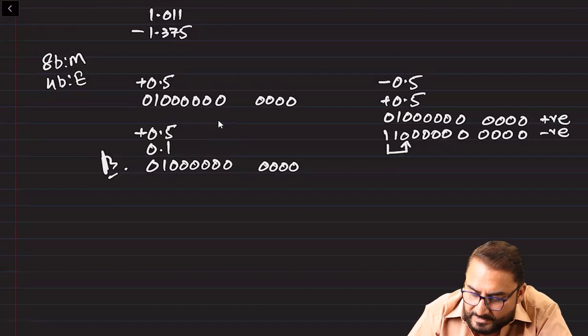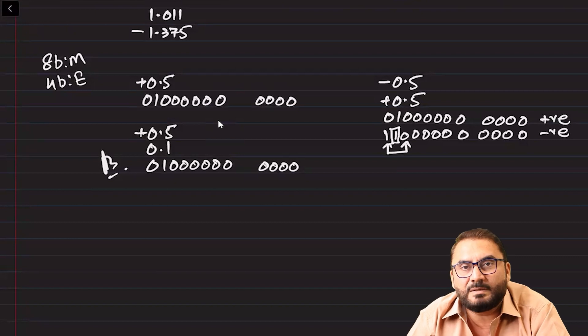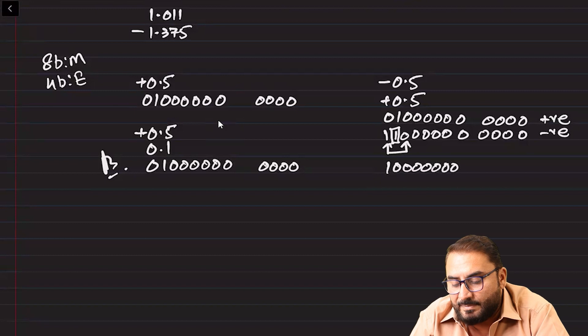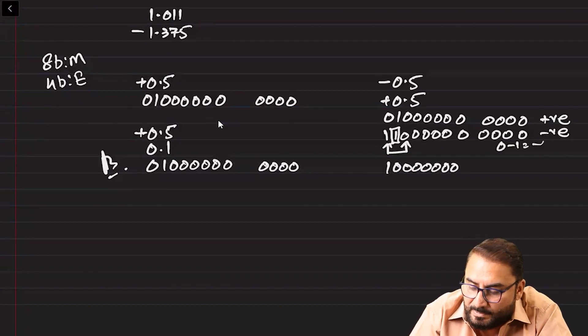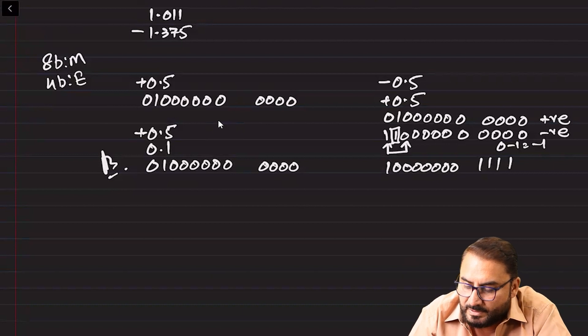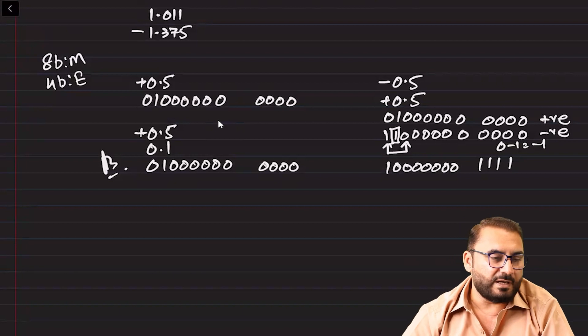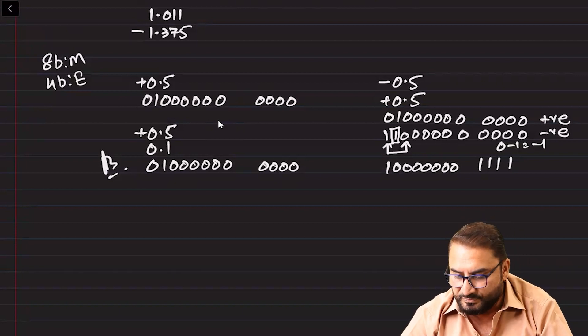After toggling, we check: first two bits are different, so the negative result is normalized. The exponent adjustment gives 0 minus 1, and in 4-bit two's complement, minus 1 is represented as 1 1 1 1. So the final answer for minus 0.5 is correctly stored. Keep in mind: while converting numbers less than 1 — whether positive or negative — you may encounter a situation mid-conversion where the number becomes non-normalized.